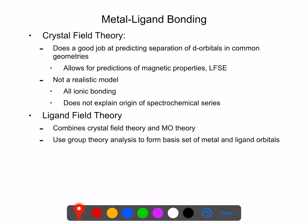But the problem is, this is not a realistic model of bonding. One of the assumptions of crystal field theory is all bonding is ionic, and we know that in reality that's not true. It also doesn't explain the spectrochemical series. We are able to derive it empirically, but we can't yet explain that.